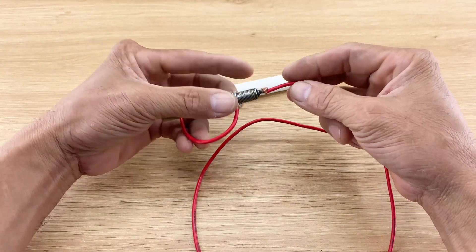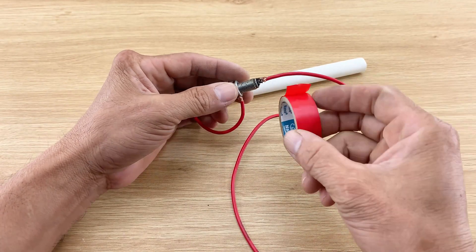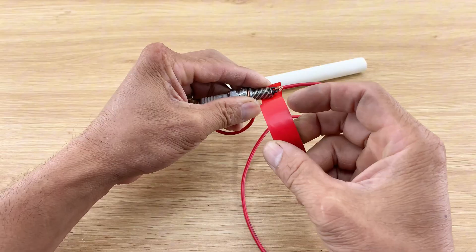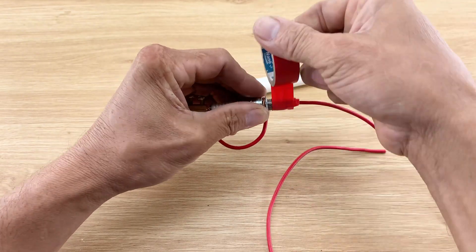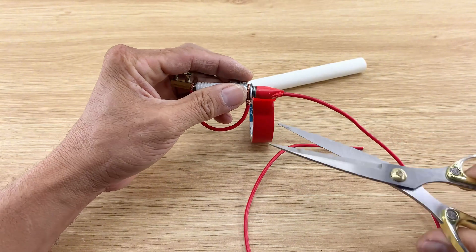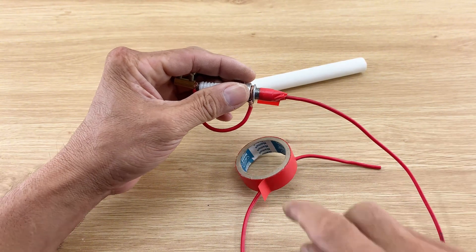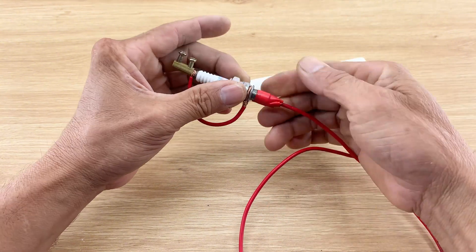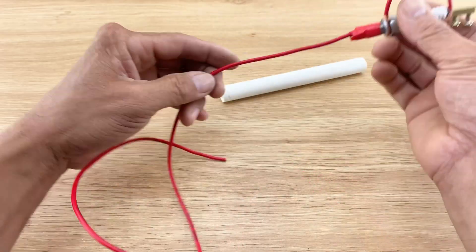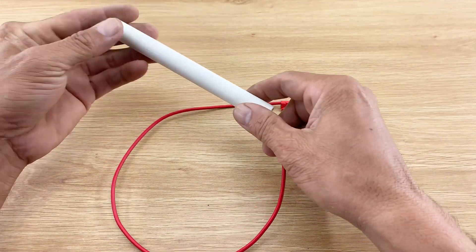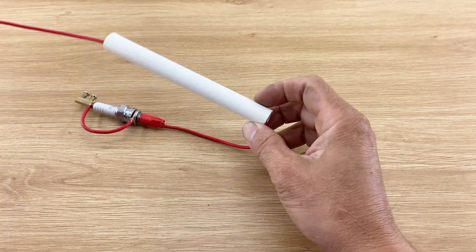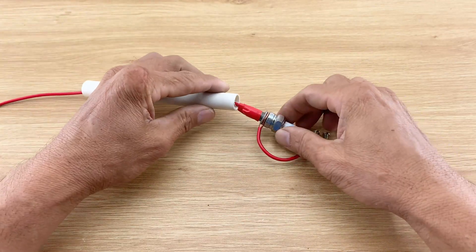To further secure it and add insulation, I'm wrapping red electrical tape tightly around the joint where the spark plug meets the PVC. This prevents any accidental electrical contact and strengthens the connection. I then carefully insert the spark plug end into one end of the PVC pipe, ensuring it fits snugly.